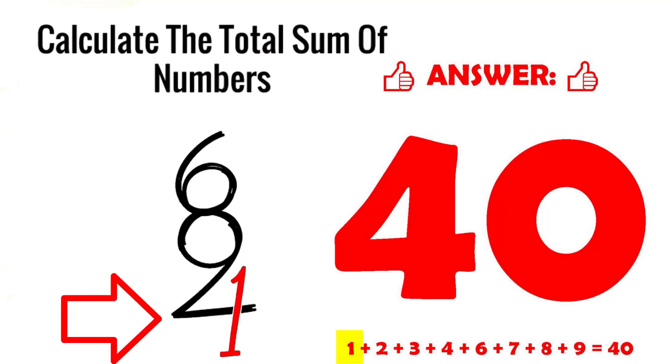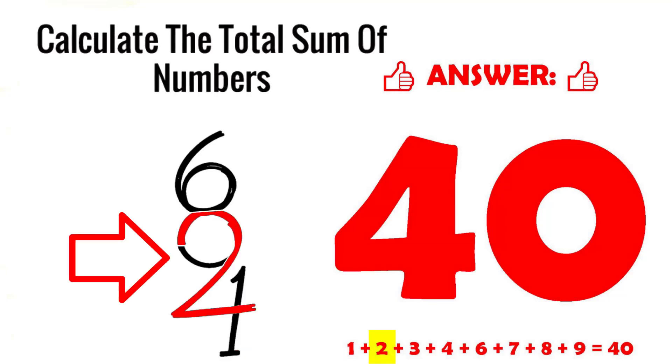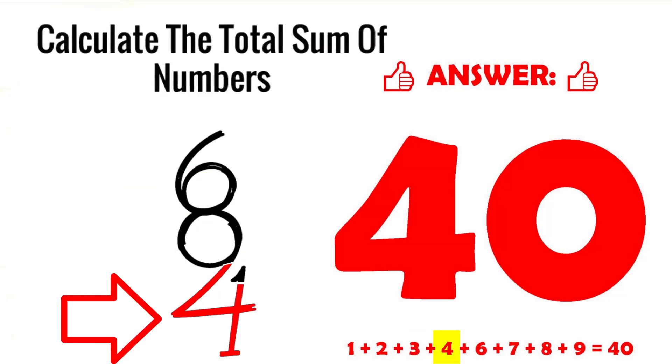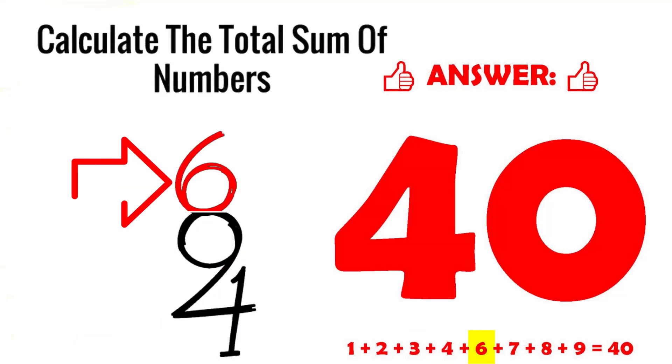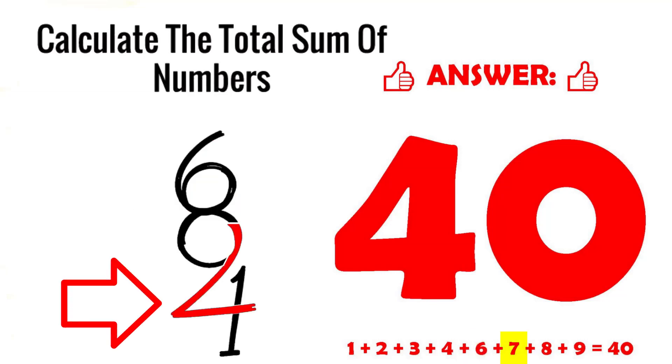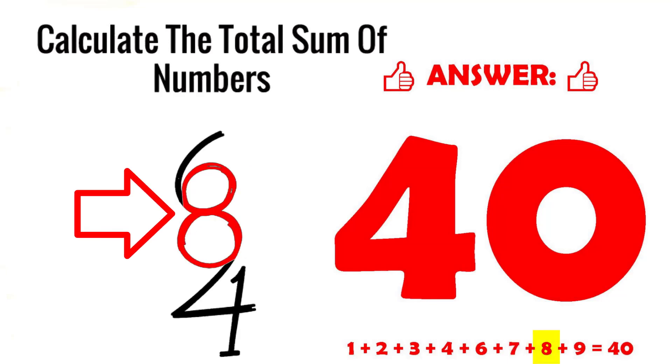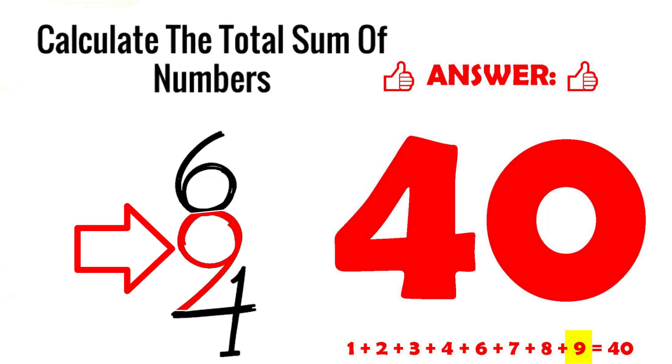1 plus 2 plus 3 plus 4 plus 6 plus 7, yes it's upside down, plus 8 plus 9 equals 40.